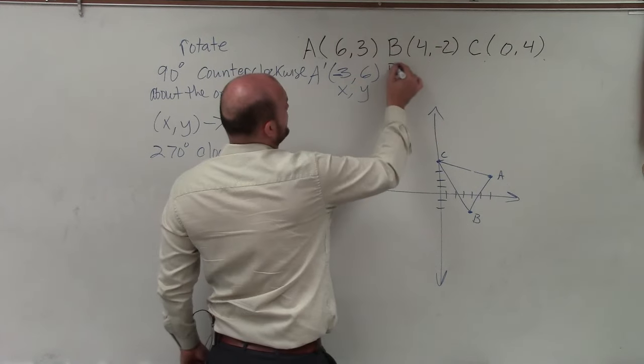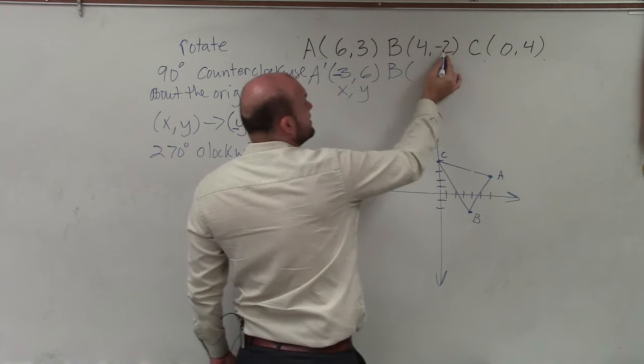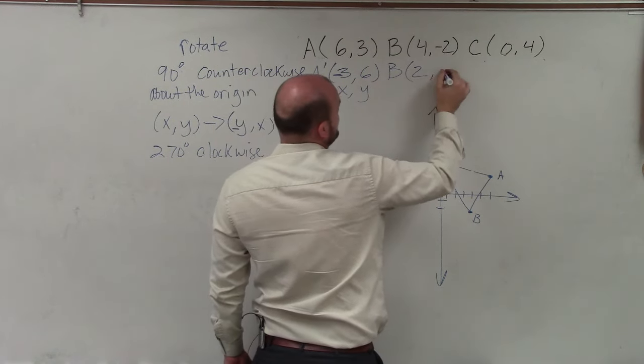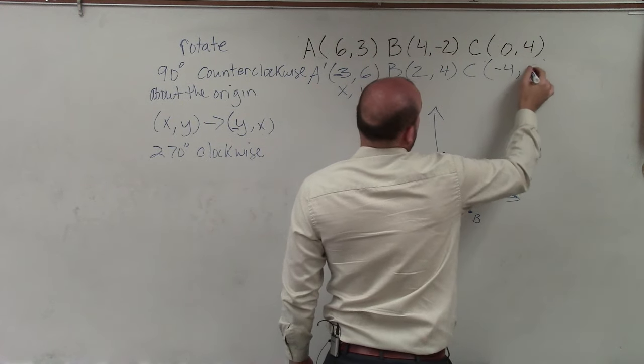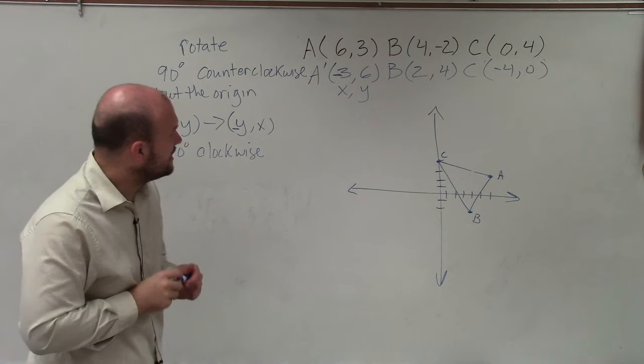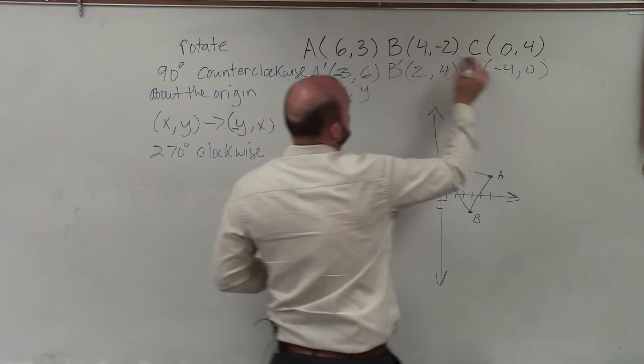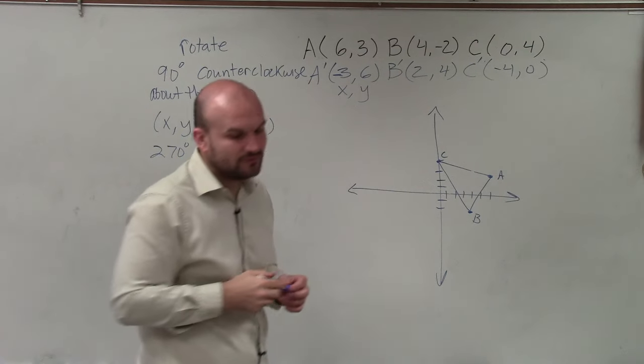By doing this for all my coordinates, B is going to be, since that's negative 2, it's now positive 2 comma 4. And C is now negative 4 comma 0. These are all my new image points, so I'll label them prime.